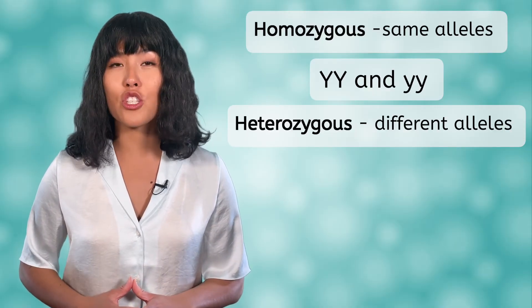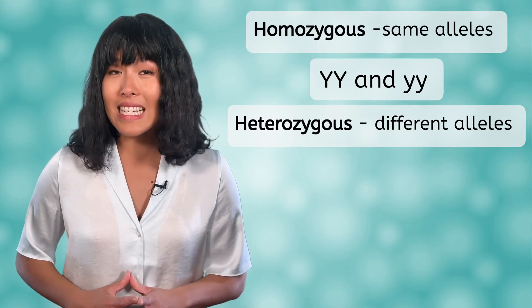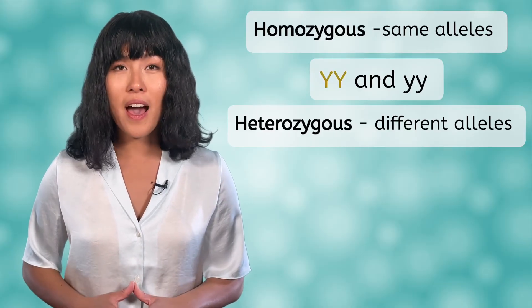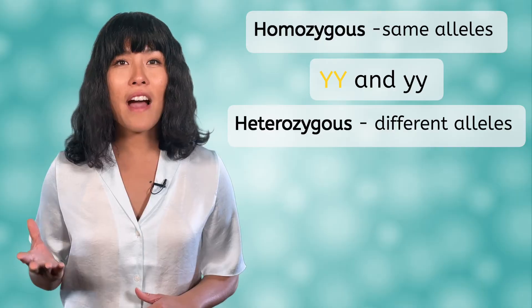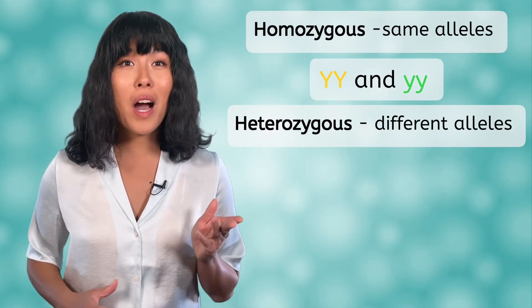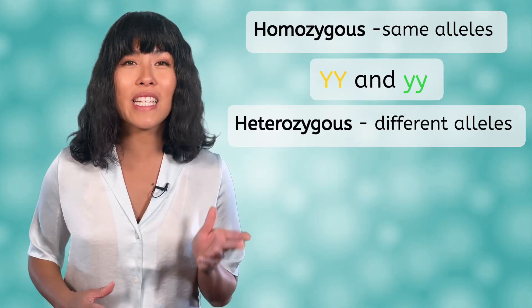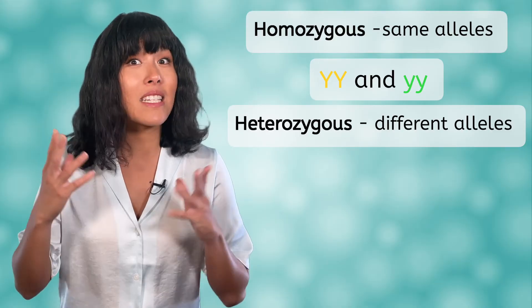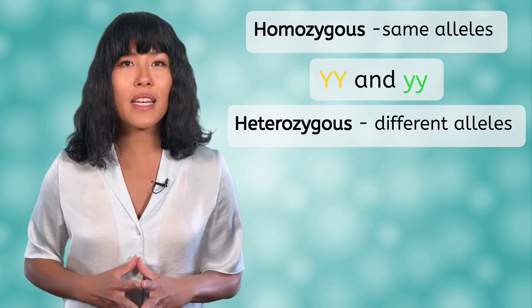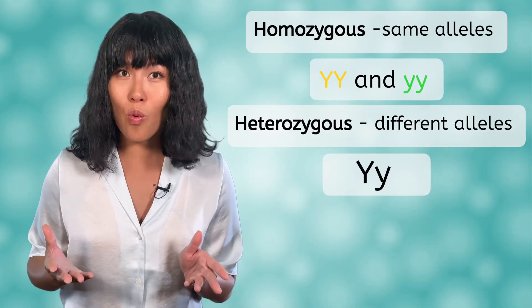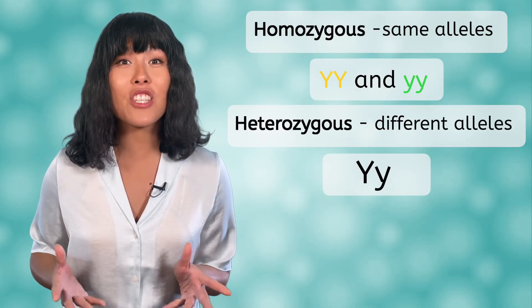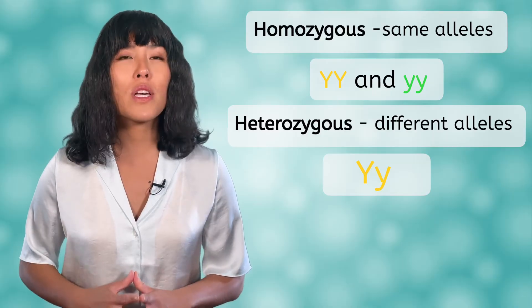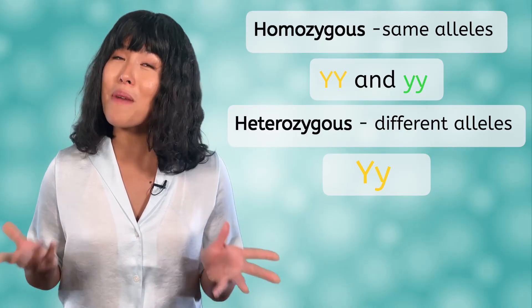The phenotype that corresponds to a homozygous genotype is easy. Since both alleles are the same, it will be whichever trait the allele codes for. A big Y, big Y genotype would have a yellow phenotype and a little y, little y genotype would have a green phenotype. The heterozygous genotype occurs when the organism gets a different allele from each parent. This would be the genotype big Y, little y. The phenotype of a heterozygous genotype will be the dominant trait, in this case yellow. Notice we always put the big letter first, it's just a matter of convention.